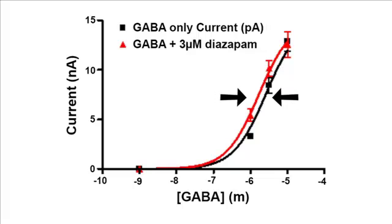The EC50 for GABA was shifted by about 1 micromolar to lower concentrations due to the increased binding affinity in the presence of the modulator.